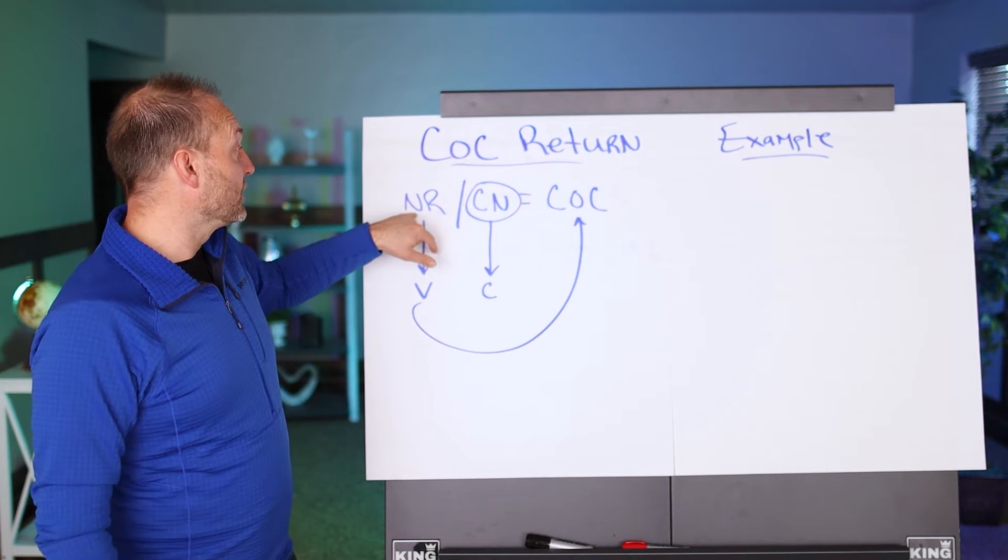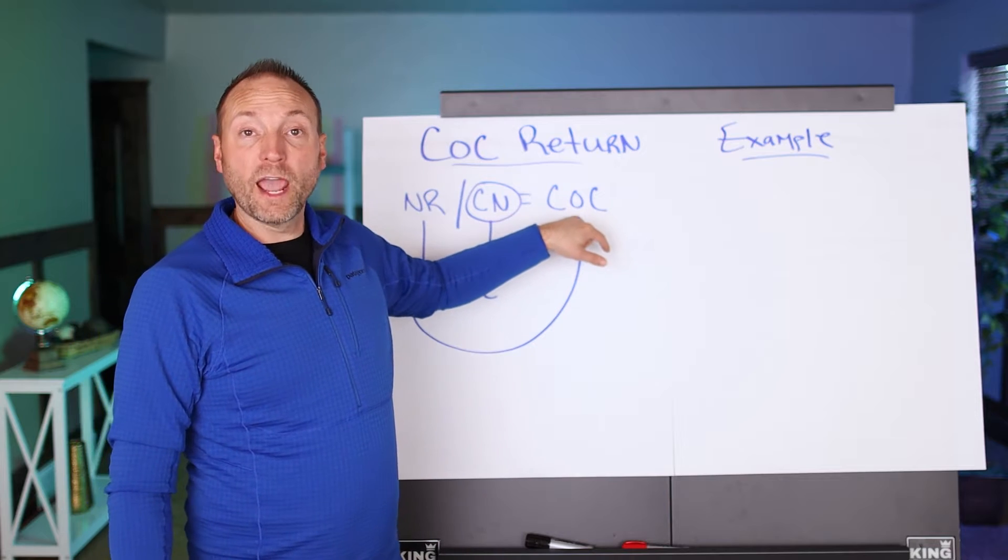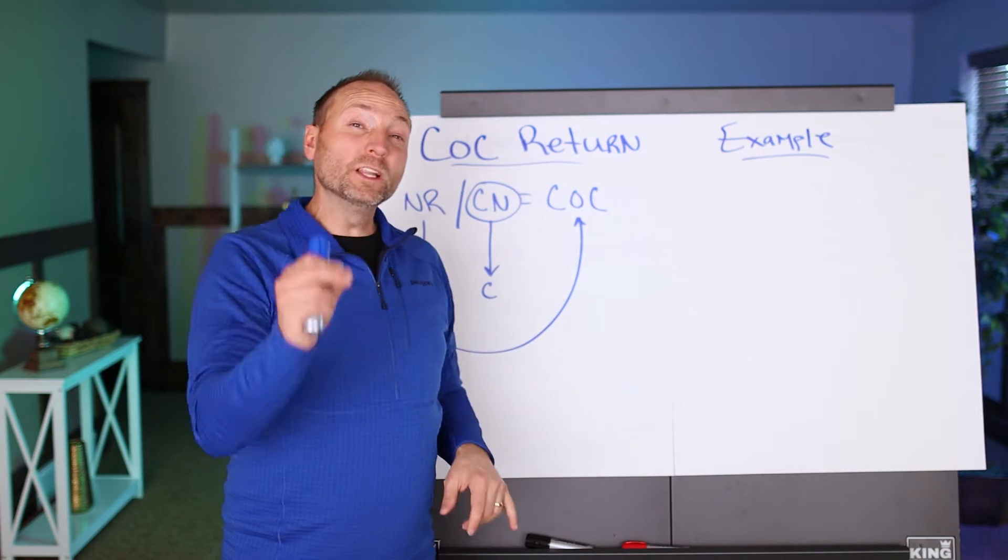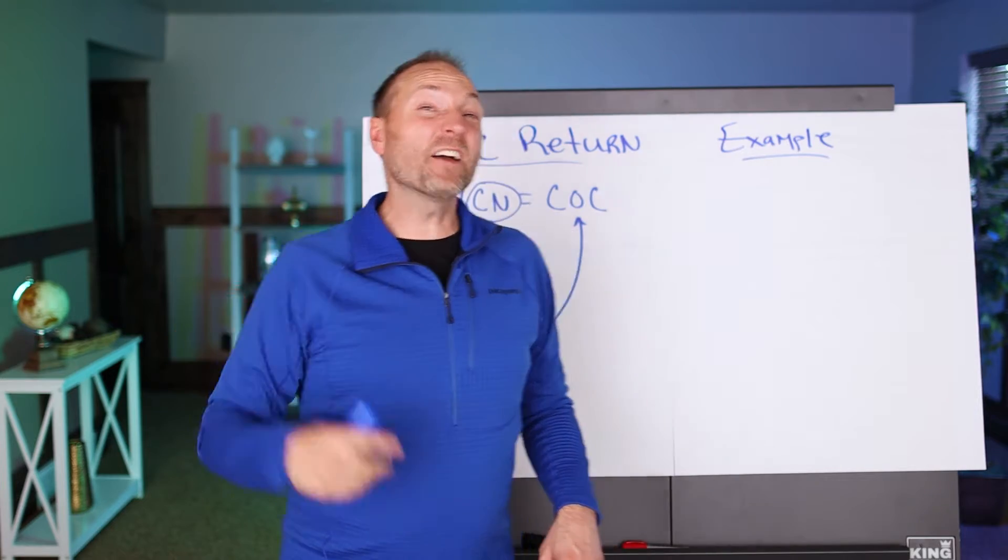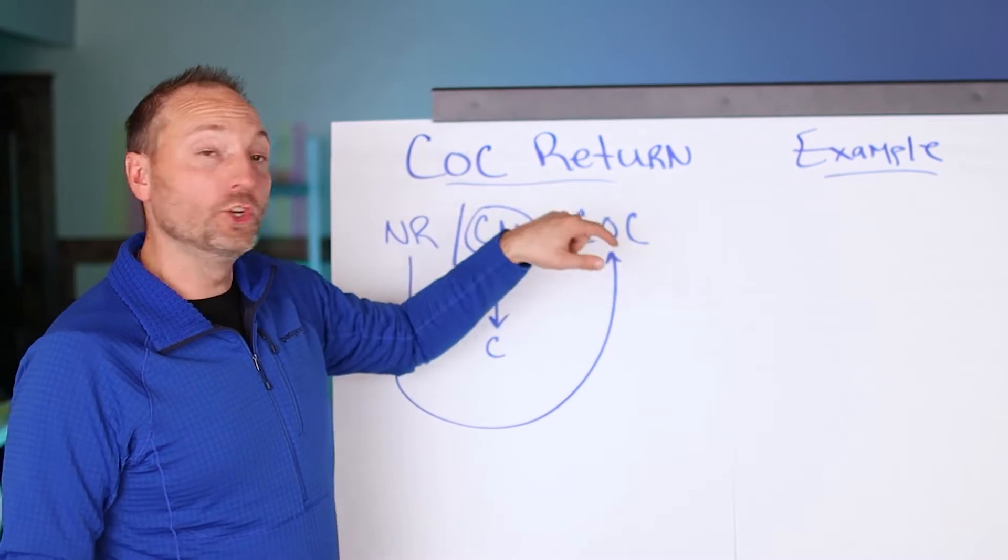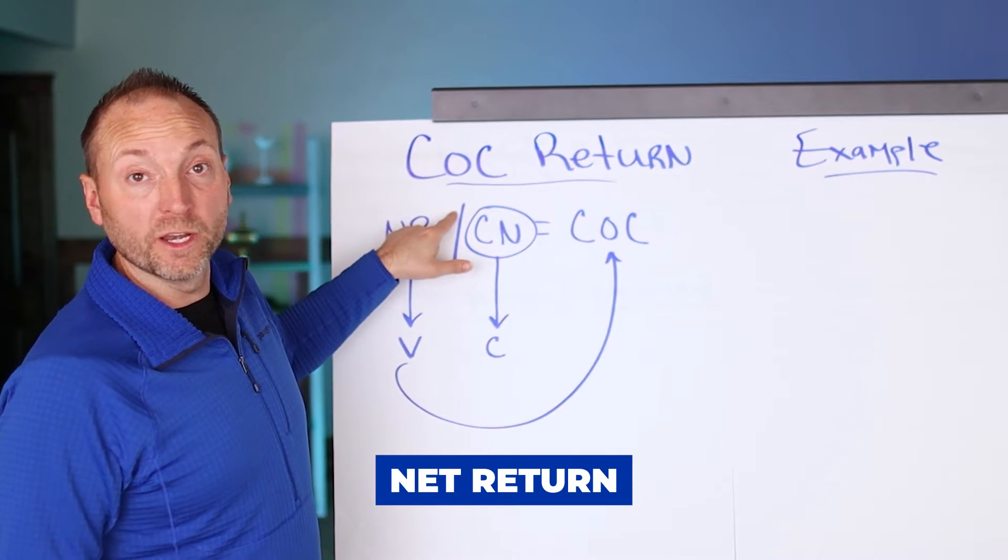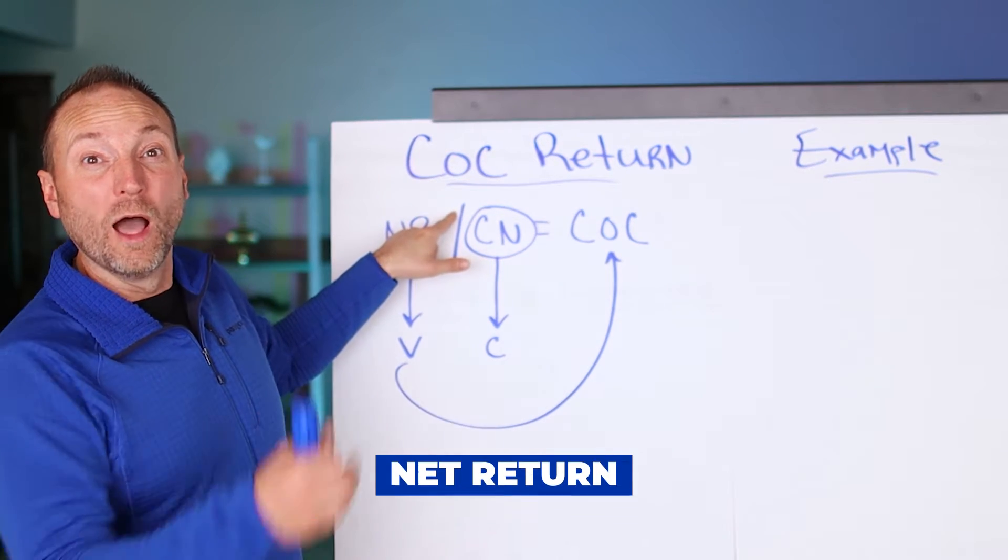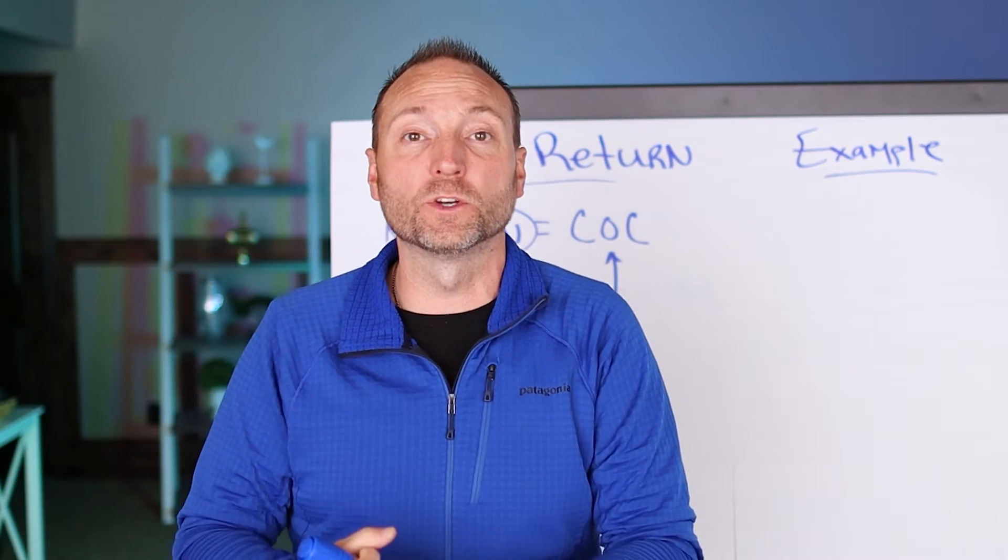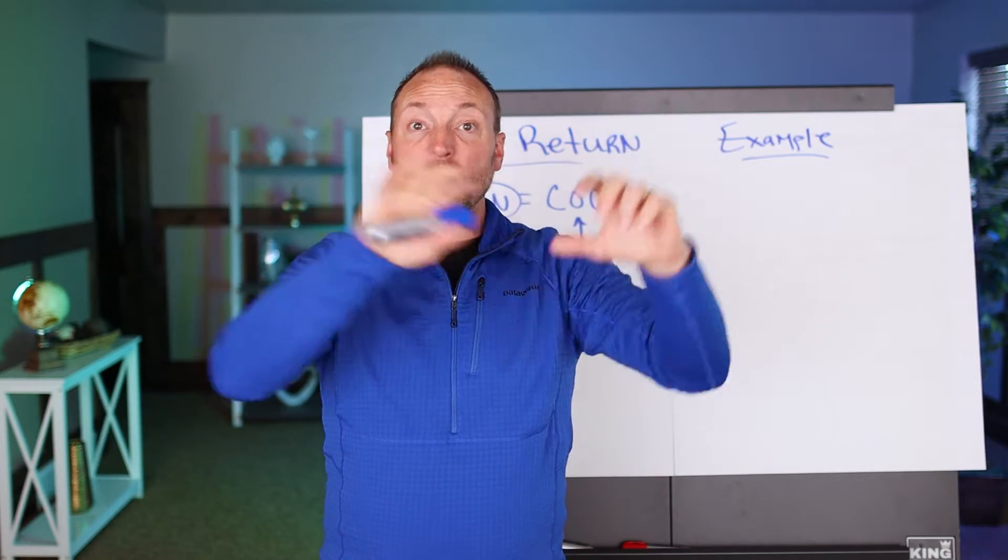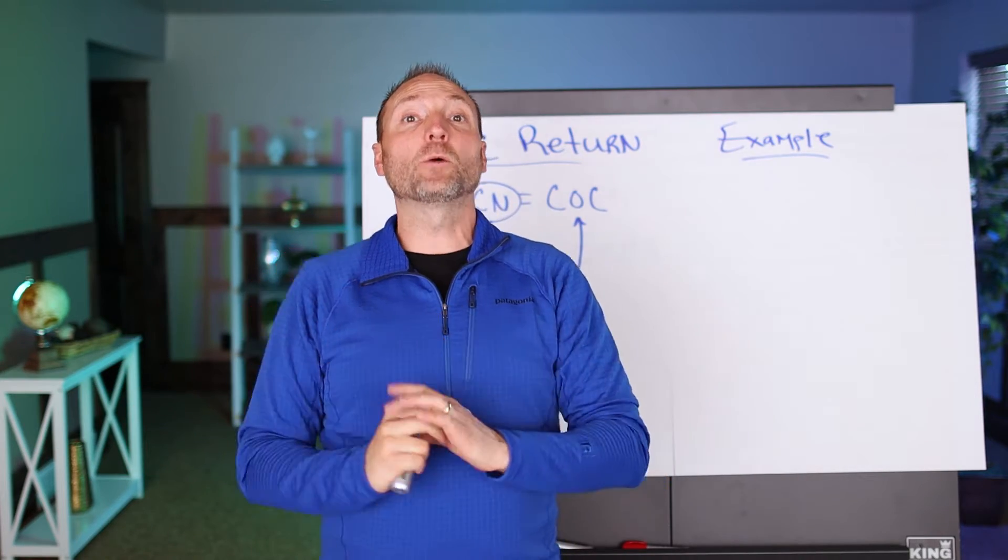Cash on cash return is your net return divided by how much cash you needed to put into the deal, and you have your cash on cash return. That's a really important number to know when you're figuring out your internal rate of return. In fact, you have to know it. You have to know what percentage you have earned throughout the deal. Your net return is how much money you make while you own the deal, after income minus expenses minus your debt payment. So you take your income minus out your expenses, minus out your mortgage and interest payment, and you have your net return.